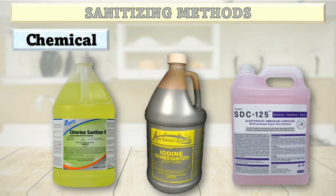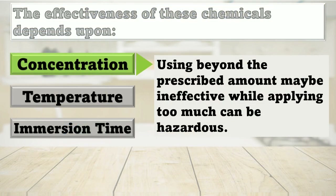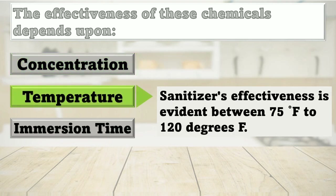Sanitizing is also achieved through the use of chemical compounds capable of destroying disease-causing bacteria. Common sanitizers are chlorine, iodine, and quaternary ammonium. The effectiveness of these chemicals depends upon concentration, temperature, and immersion time. Concentrations below the required amount will result in a failure to sanitize, while concentrations too high are considered toxic and poisonous. The water must be warm enough to increase the activity of the solution, but not so hot that it increases evaporation of the sanitizer. Generally, temperatures between 75 and 120 degrees Fahrenheit allow sanitizers to work properly. At higher temperatures, chlorine compounds may corrode some metal items, and chlorine and iodine compounds may leave the solutions.